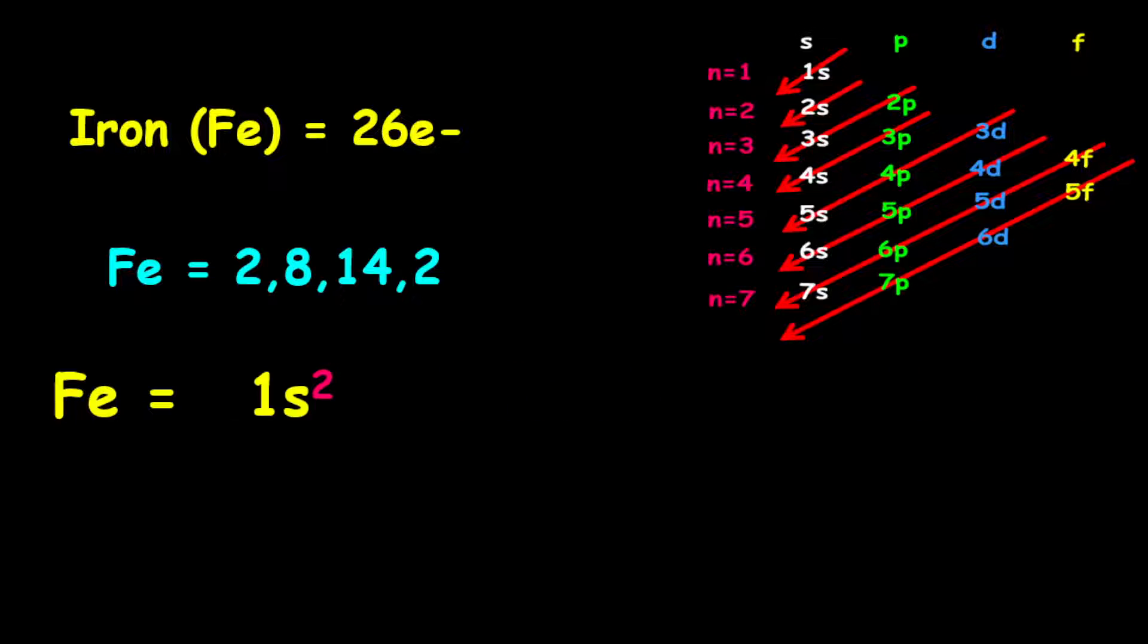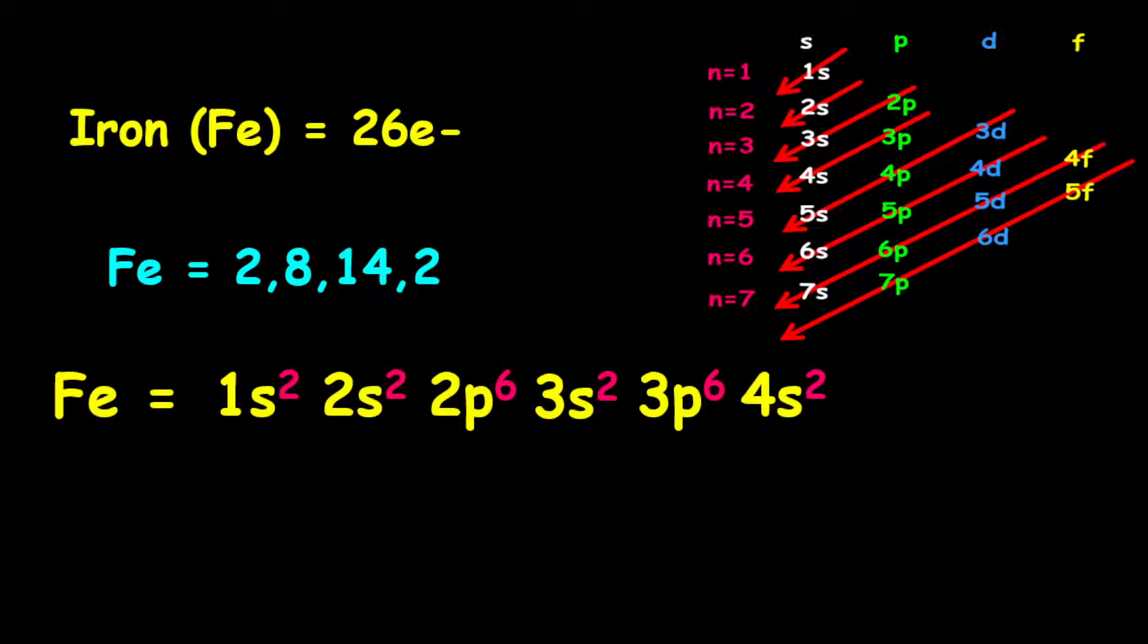it is given as 1s2, followed by 2s2, then 2p6, followed by 3s2, then 3p6, followed by 4s2, and finally 3d6. Now notice on the third shell,